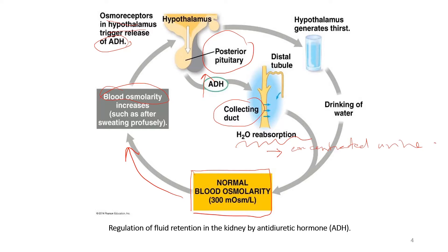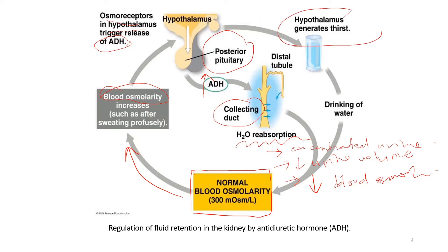This will reduce the urine volume and at the same time lower the blood osmolarity. The hypothalamus will also generate the sensation of thirst, so we will feel thirsty and drink more water. This action will cause the blood osmolarity to return back to normal.